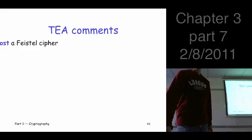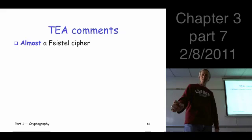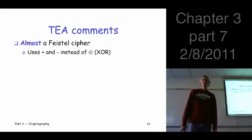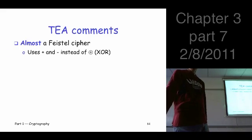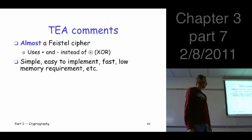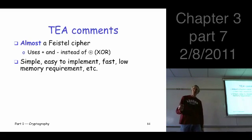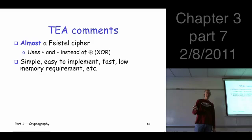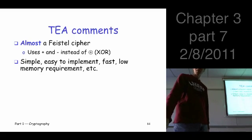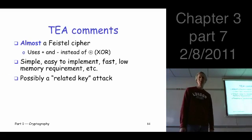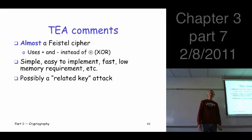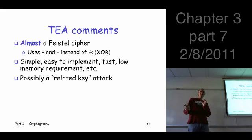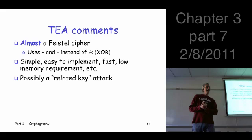Okay, so finally, TEA cipher. It's almost a Feistel cipher, all right? Just because it uses the plus and minus instead of the XOR, it is very simple, easy to implement. It's reasonably fast. I don't think it's quite as fast as DES. It's certainly not as fast as AES, but given how easy it is to code, it certainly has its uses.